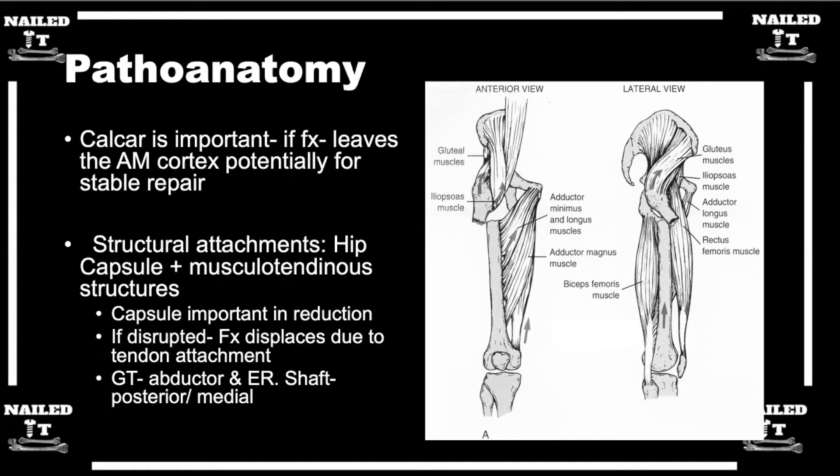Anatomy is the key to everything — it's a great teacher. For the more stable standard intratrochanteric fractures, I tend to think of it as the femoral shaft falls away from the proximal femur. It shortens and externally rotates. So when you think about your reduction maneuver for a more simple intratrochanteric fracture, it's traction to get the length back and then internal rotation of the femoral shaft to bring it up to meet the proximal fragment. The anatomy makes sense.